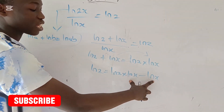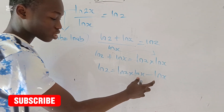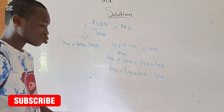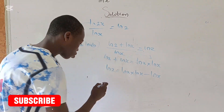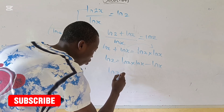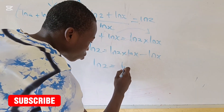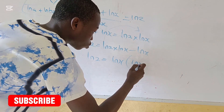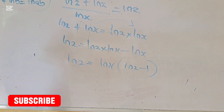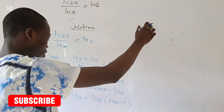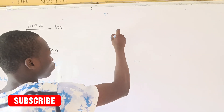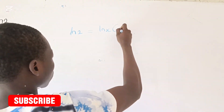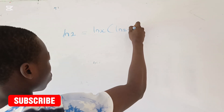So when you look at the right-hand side, you can see that the natural log of x is a common factor. What we are going to do is factor it out. We have the natural log of 2 equals, when you factor it out, the natural log of x in brackets times the natural log of 2 minus 1.